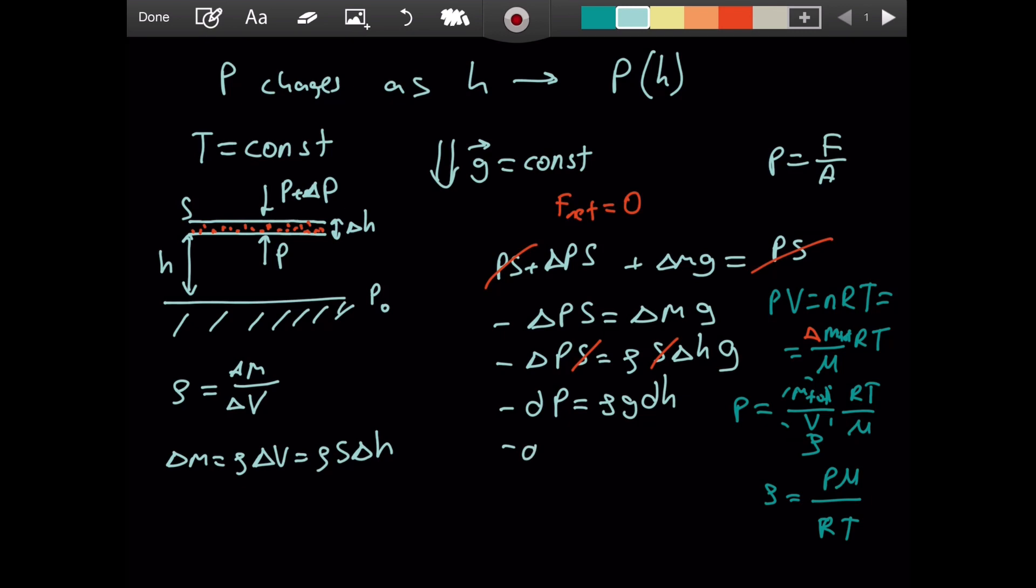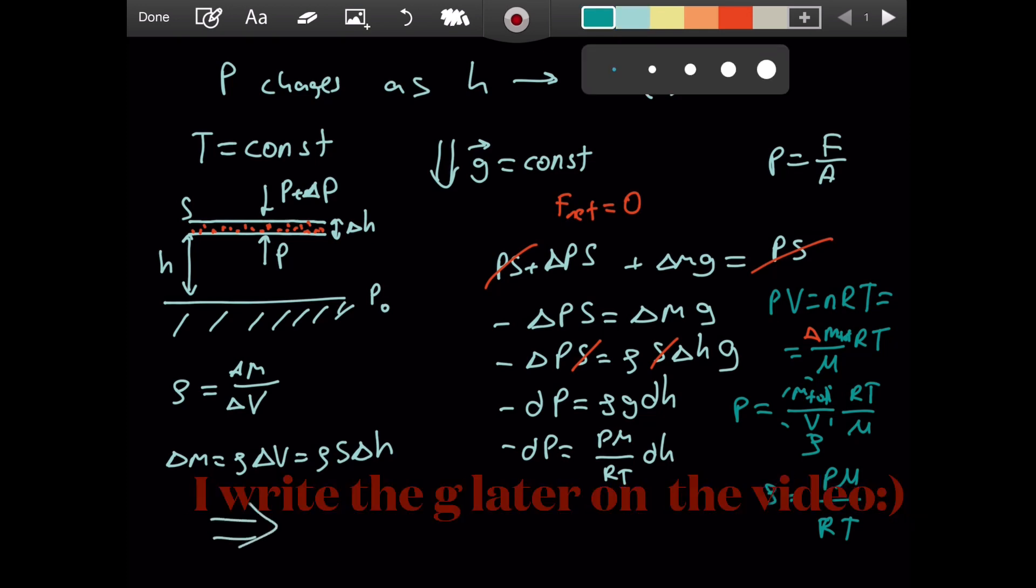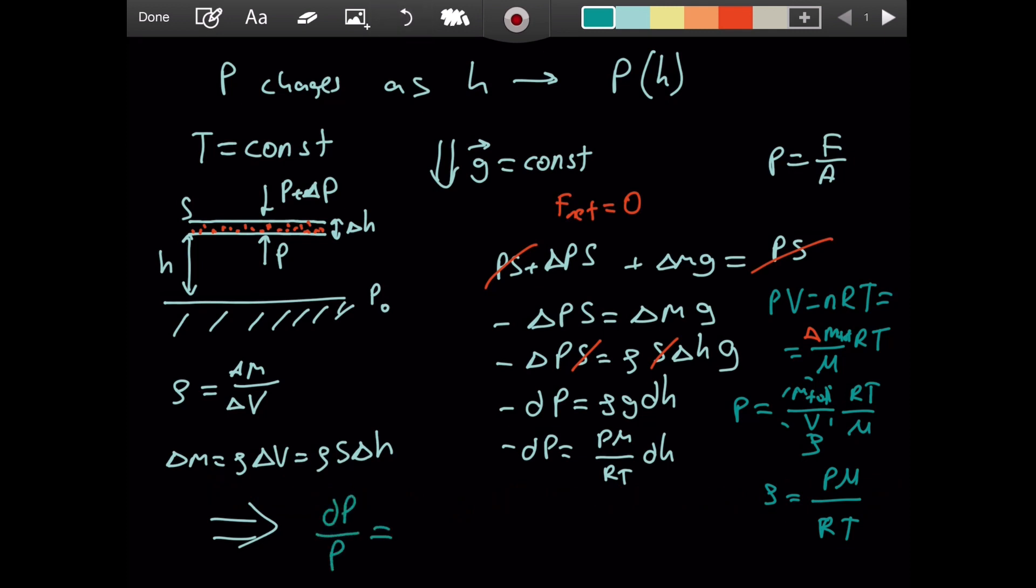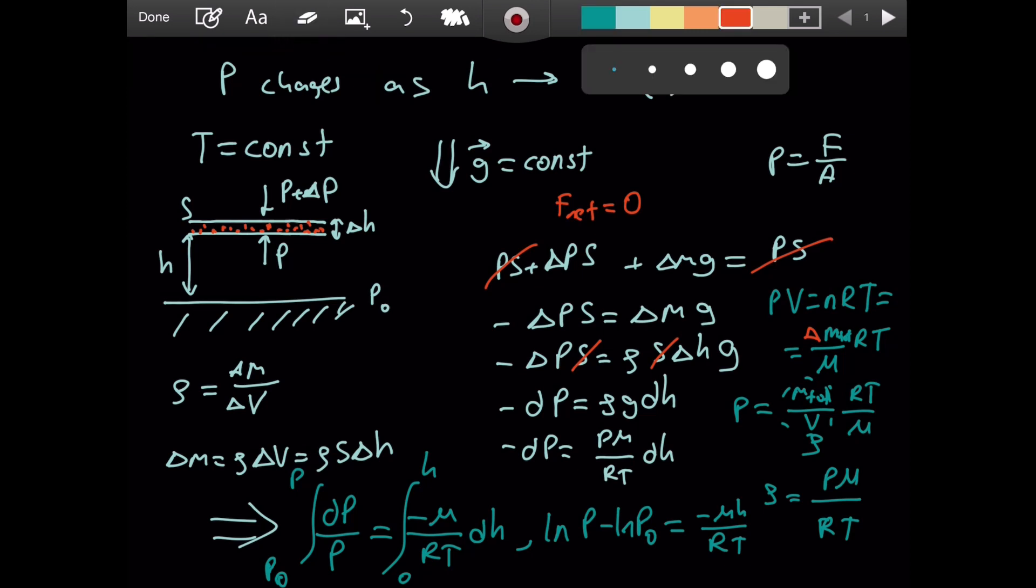Substituting, we have negative dP equaling PM over RT times g times dH. So dP by P equals negative Mg over RT dH. Taking the integral on both sides from 0 to H, when at 0 the pressure is P naught and at H it's P, we get ln P minus ln P naught equals negative MgH over RT. We can combine these inside one logarithm: ln(P over P naught) equals negative MgH over RT.